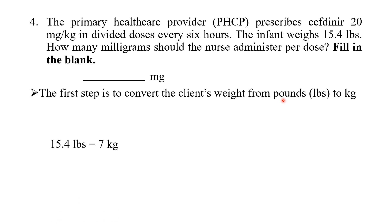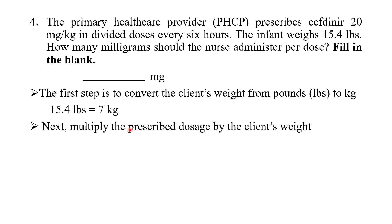To convert pounds to kg, divide 15.4 by 2.2, which gives 7 kg. Now apply the formula: prescribed dose × client's weight = 20 mg × 7 kg = 140 mg. So the total daily dose is 140 mg.